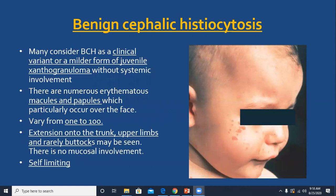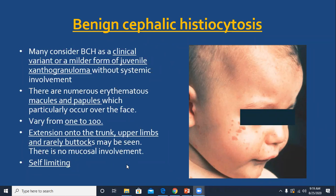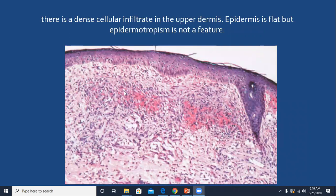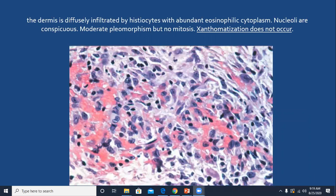Benign cephalic histiocytosis is a related disorder which can be considered a clinical variant or mild form of juvenile xanthogranuloma with no systemic involvement. It involves the head and neck region. There can be numerous erythematous macules and papules varying from 1 to 100, and it may extend to the trunk and upper limbs. It is characterized by proliferation of sheets of histiocytes with eosinophilic cytoplasm, and xanthomatization is not present as in juvenile xanthogranuloma.